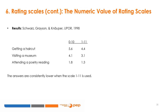Here is an additional example using scales from 0 to 10 or from 1 to 11. Respondents were asked how much they enjoy getting a haircut, visiting a museum, and attending a poetry reading. Consistently, the answers are lower when the scale goes from 1 to 11.